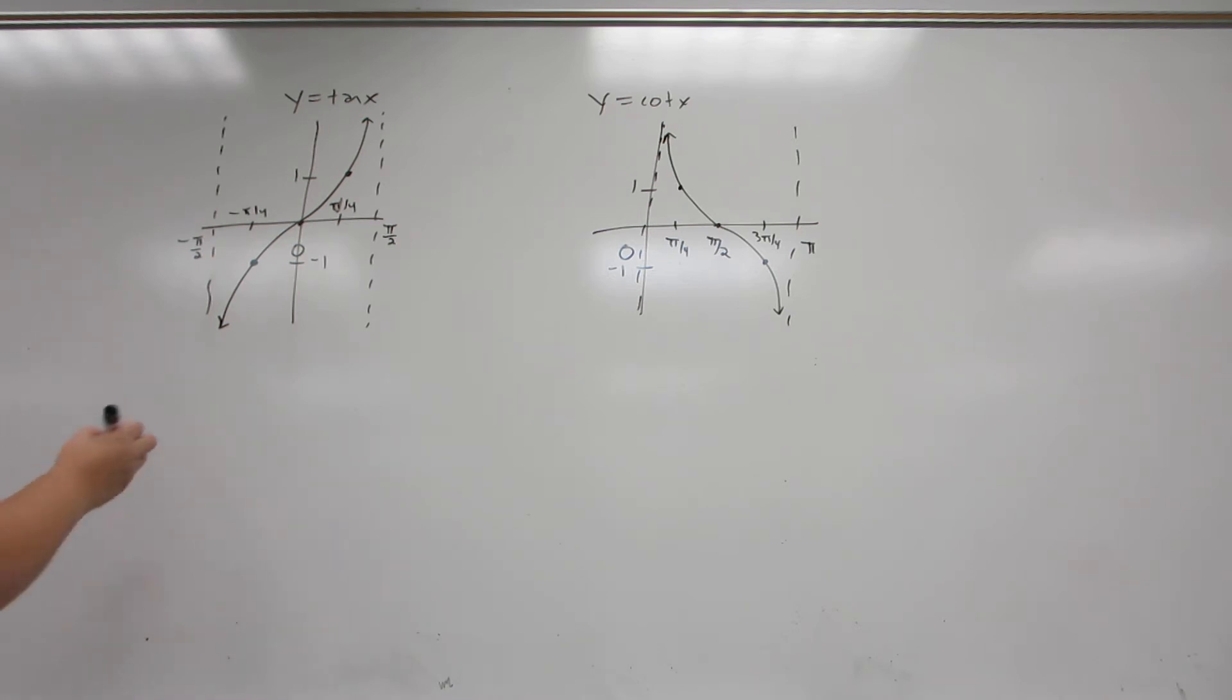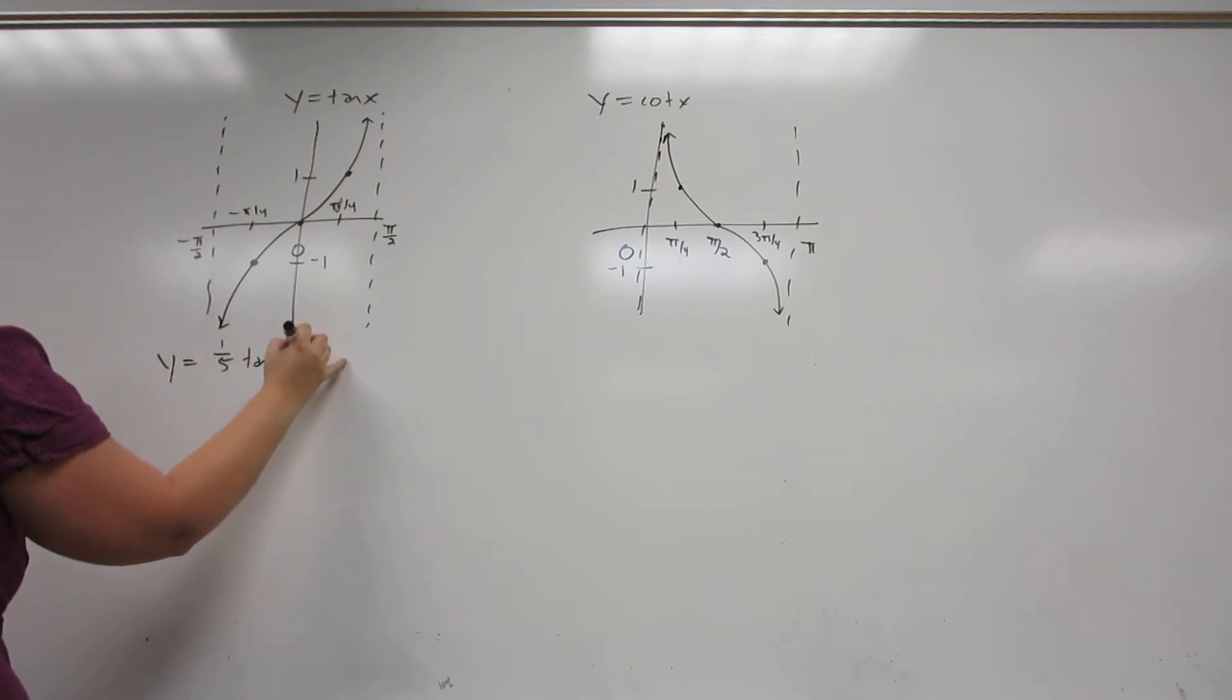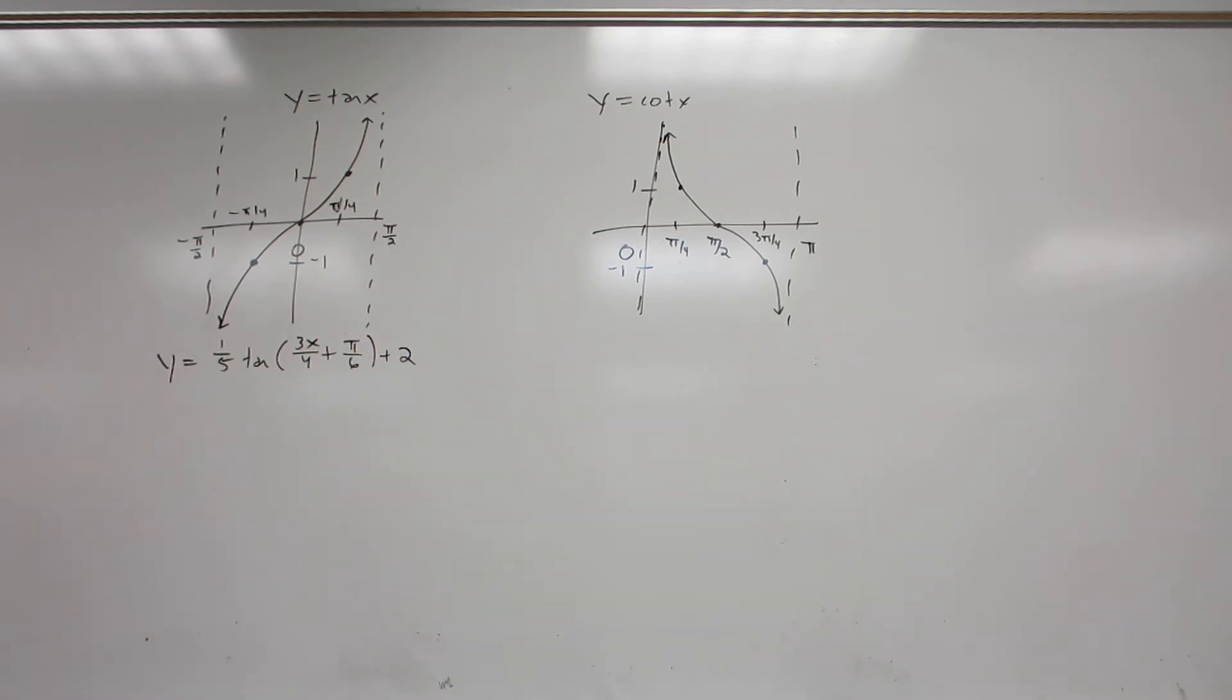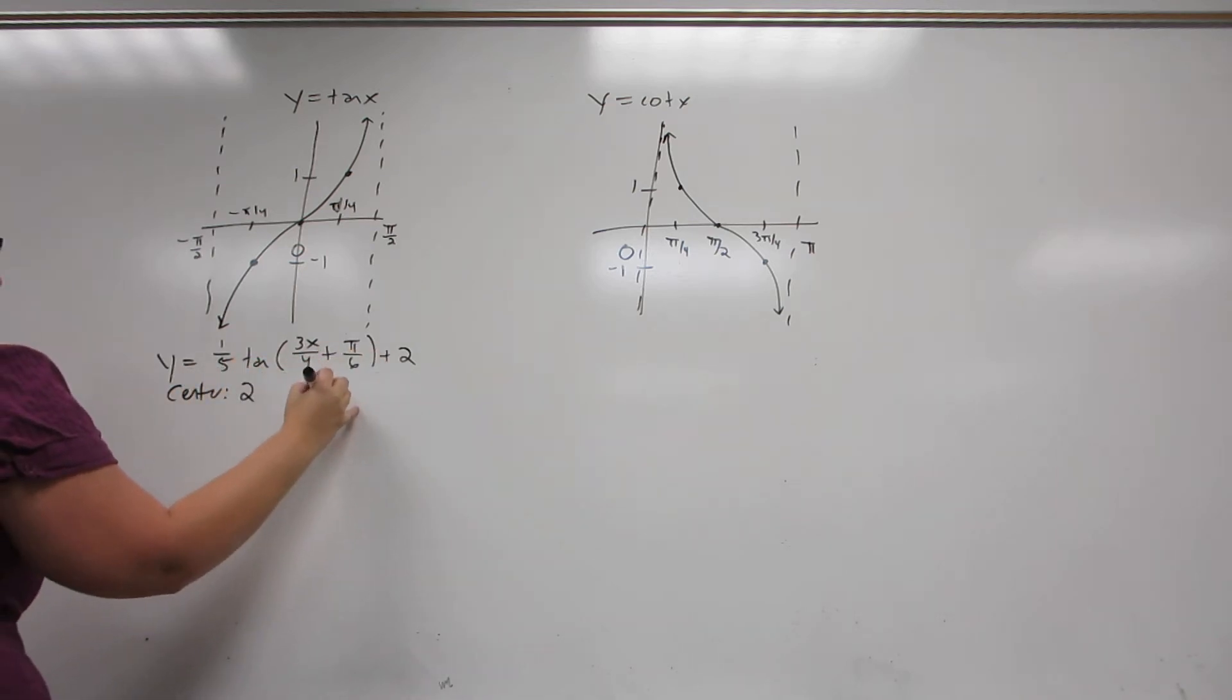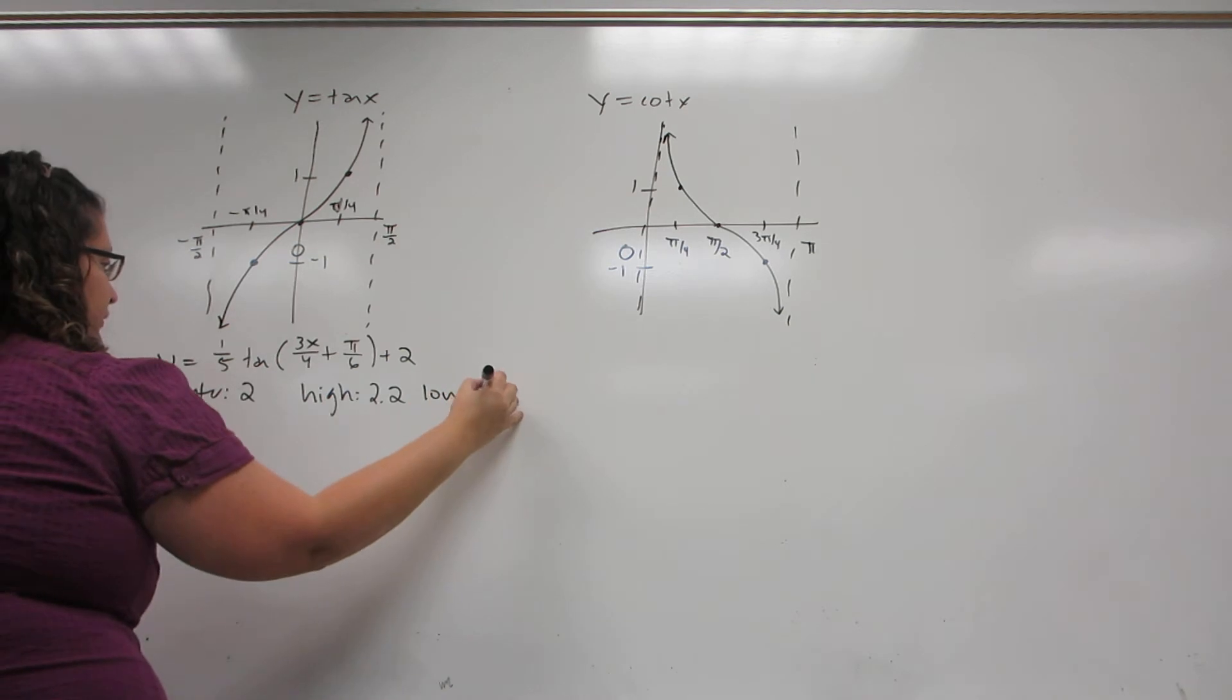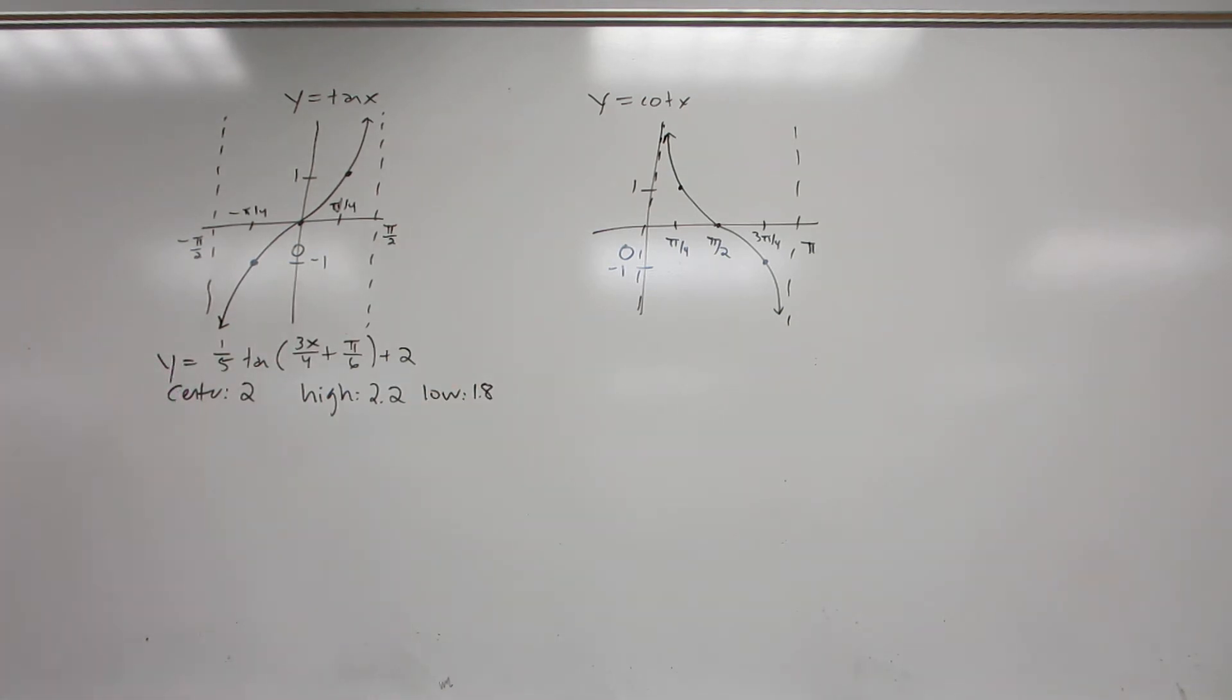So let's look at an example of each. Now when we're solving this, the y coordinate setup has not changed. So our center will be at two, our high will be at two plus one-fifth, and our low will be at two minus one-fifth. Same procedure we used for the other four trigonometric functions. Now when we're finding our key points, we're once again going to take it five times the piece that is inside the parentheses.